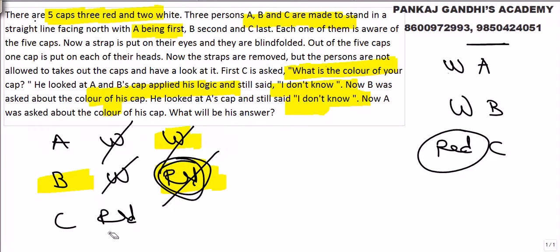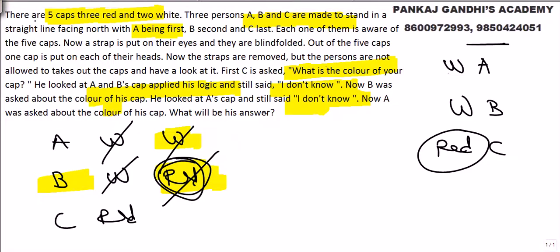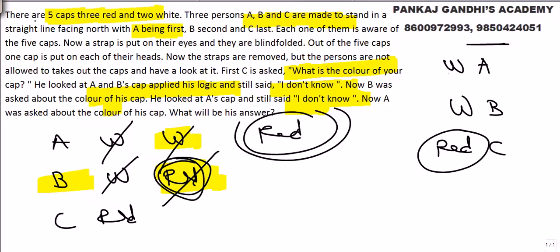Both A and B know their caps are not white. B looked at A's cap — had A's cap been white, B would have given the answer, but he didn't. So A knows very well his cap is not white. When we ask A the color of his cap, he says: 'My cap is red.'